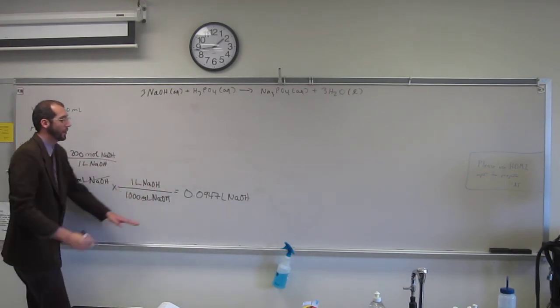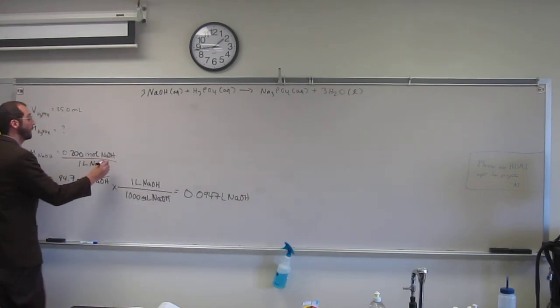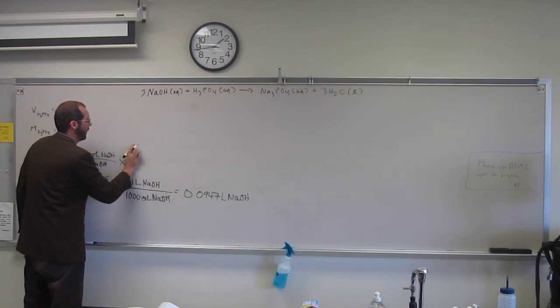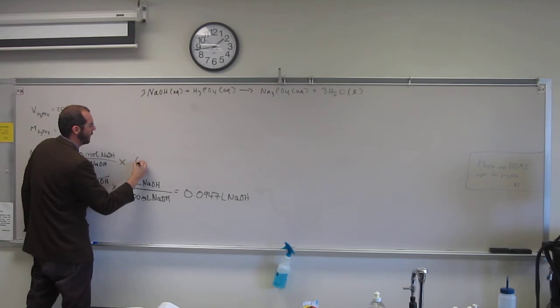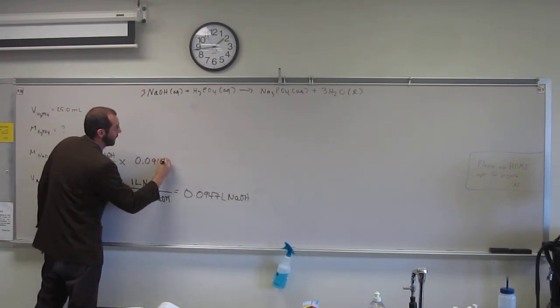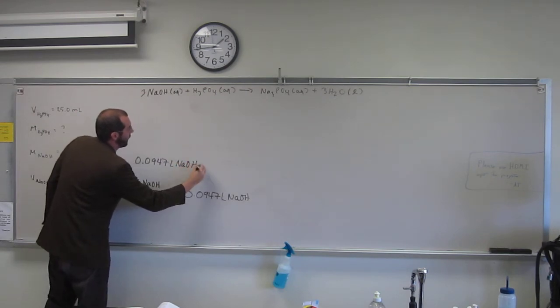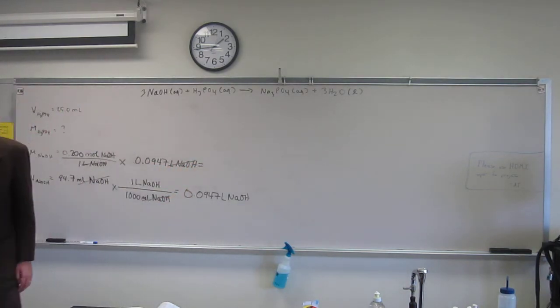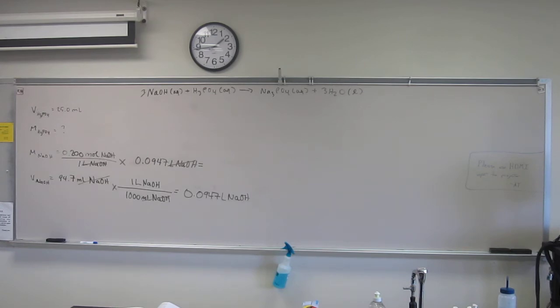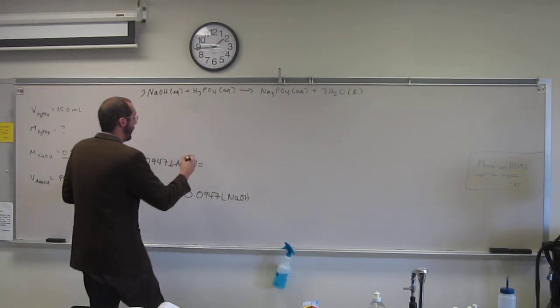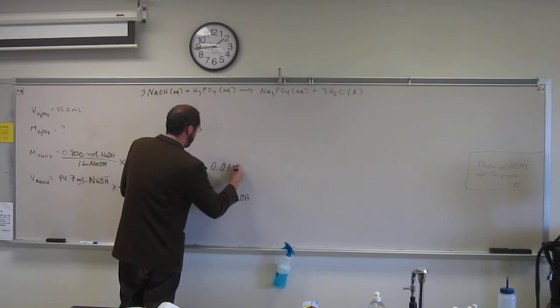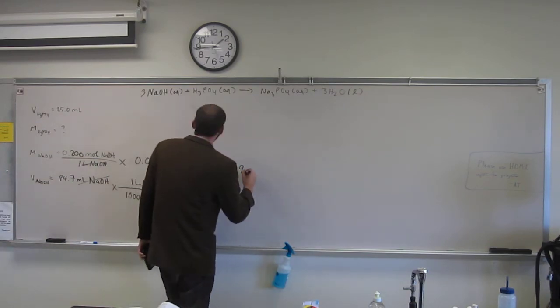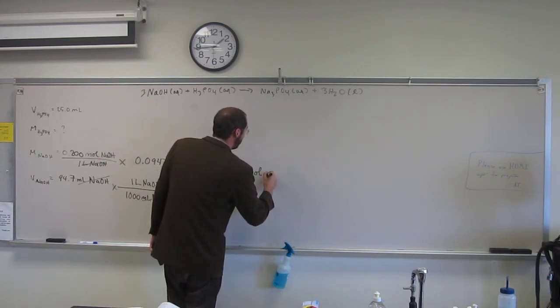And then, so we've got that many liters, we're trying to figure out how many moles of NaOH we've got. So we're going to multiply this conversion factor, the molarity, by what we just got. The number of liters of NaOH, that's going to cancel with that, and going to give us the number of moles, at 0.0189 moles of NaOH.